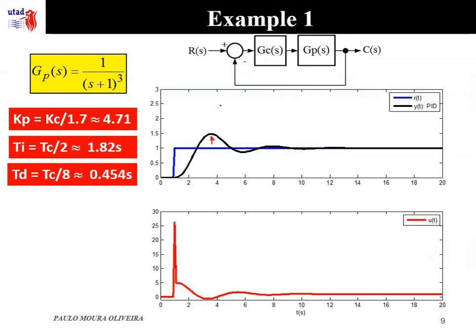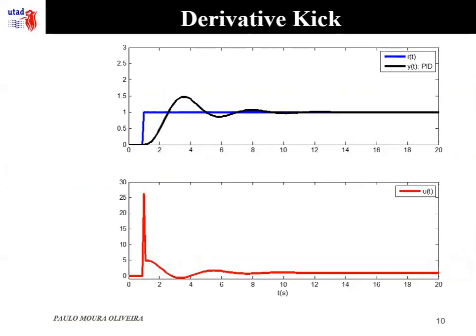The control signal reaches a high value at the initial point, and this has to do with the derivative kick. The derivative kick occurs because the derivative part is applied to the step input. Ideally, when you get a step, the error is also a step, and the derivative of a step is ideally infinite. In practice, this causes the actuator to take a very large value.